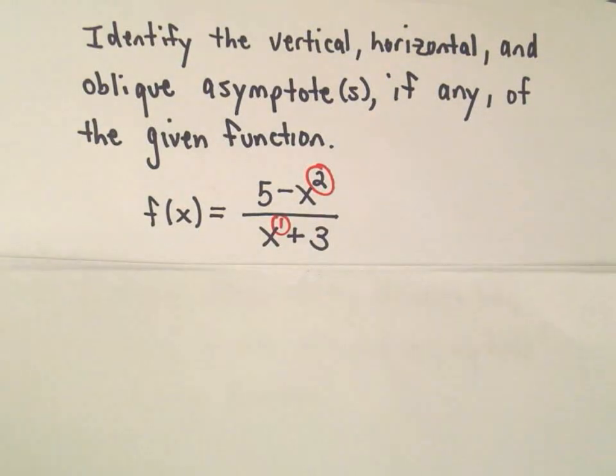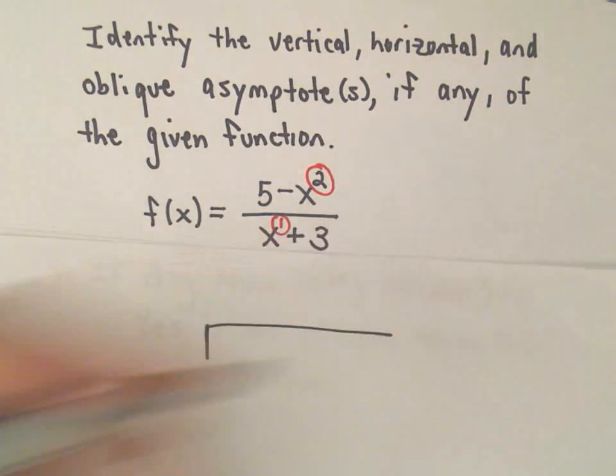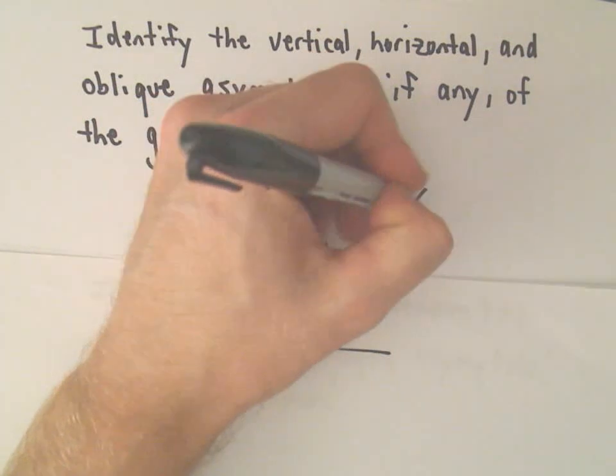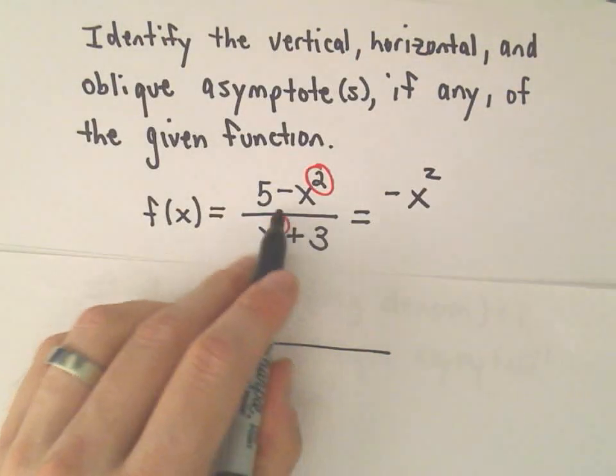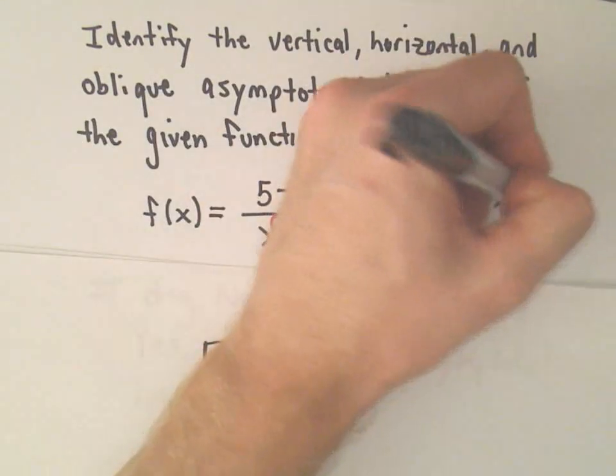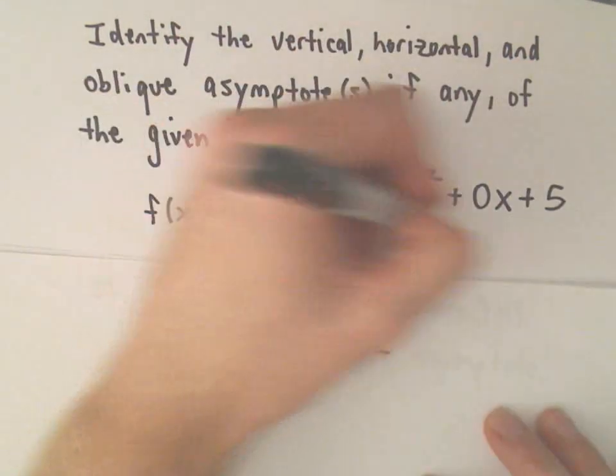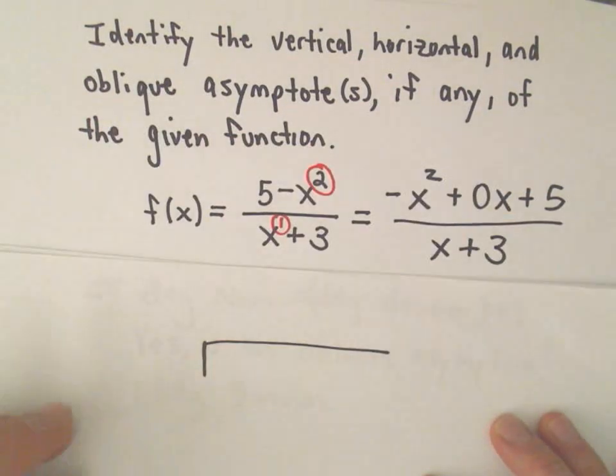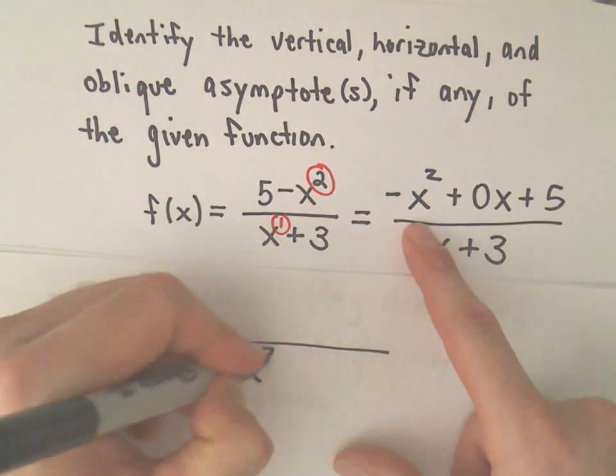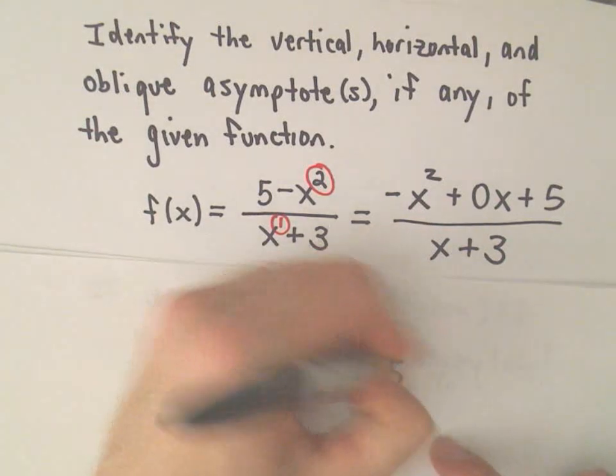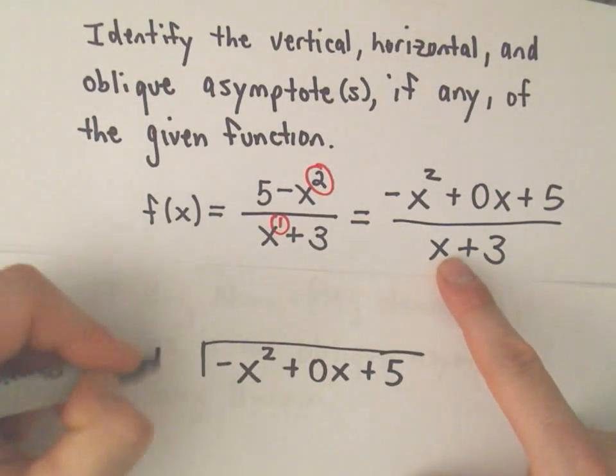Alright, so let's see. The first thing I'm going to do is write this in descending order in the numerator. We have negative x squared. Notice there's no term involving just x. I'm going to write 0x just to fill it in. And then plus 5. And in the denominator, it's already written in descending order. So, we have negative x squared plus 0x plus 5 divided by x plus 3.